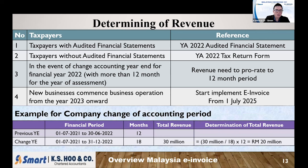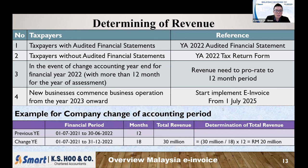For companies that have changed their financial year end resulting in an accounting period of more than 12 months, you need to proportion accordingly to a 12-month period. For example, if 18 months' total revenue is RM30 million, proportioned to 12 months it becomes RM20 million, placing you under phase three or two accordingly. For new businesses that commenced operations from 2023 onward with no 2022 record, all these companies will start implementing e-invoice from 1st July 2025 under phase three.